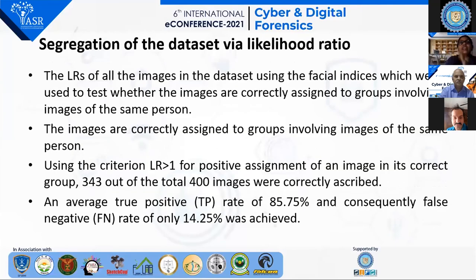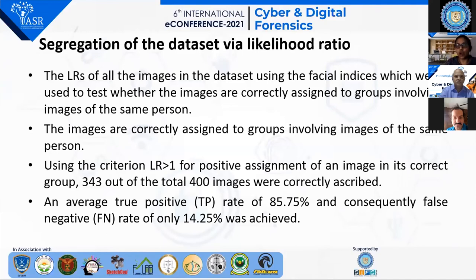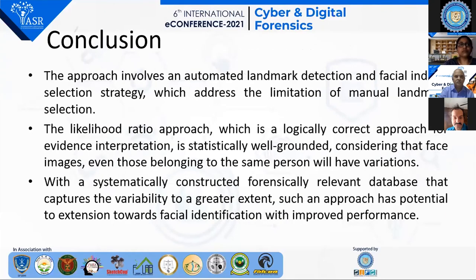We segregated the data via likelihood ratio. The LR of all images in the dataset using facial indices was used to test whether the image is correctly assigned to groups involving images of the same person, using the criterion of LR greater than one for positive assignment. We concluded that 343 out of 400 images were correctly identified, with an average true positive rate of 85.75% and a false negative rate of 14.25%.